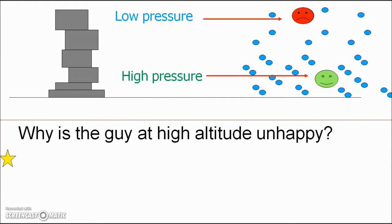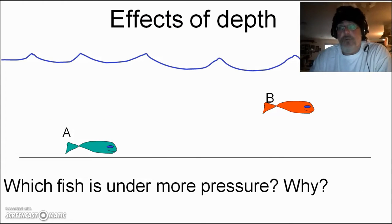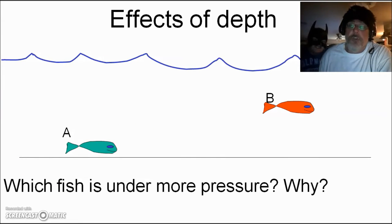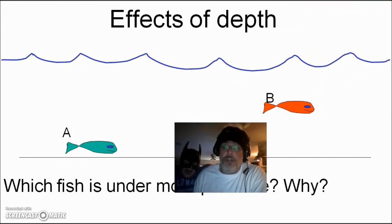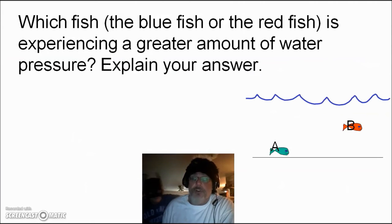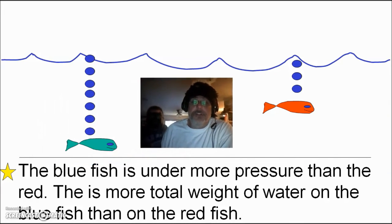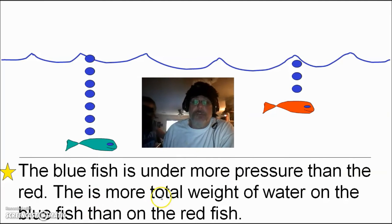Now let's apply the same idea to depth and water, like in the ocean. So if you see these two fish, which fish is going to be under more pressure and why? So is it going to be fish A or is it going to be fish B? As you go down deeper and deeper and deeper under the ocean, what is going to happen to the amount of water pressure? This would be a good question to know. Now the answer is the blue fish is going to be under more pressure than the red fish. This is because there is more total water weight above the blue fish than there is above the red fish.